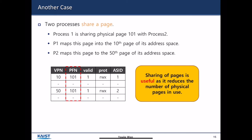There is another case: when two processes share a page. For example, process 1 is sharing physical page 101 with process 2. They have different virtual page numbers but actually point to the same page frame. If we properly exploit page sharing, we can effectively reduce the number of physical frames used. Process 1 maps this page onto the 10th page of its address space, and process 2 maps it to the 5th page of its address space. It is possible for TLB entries to share a physical page.